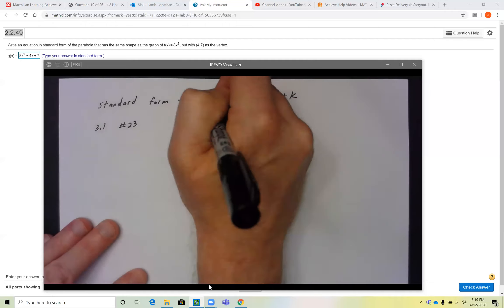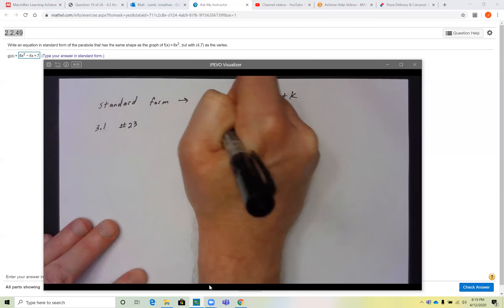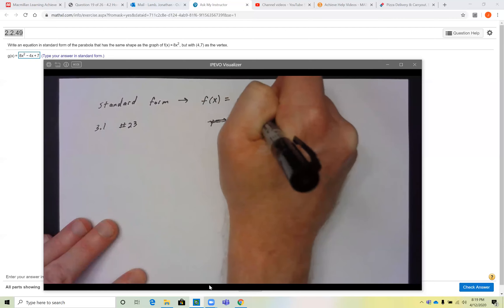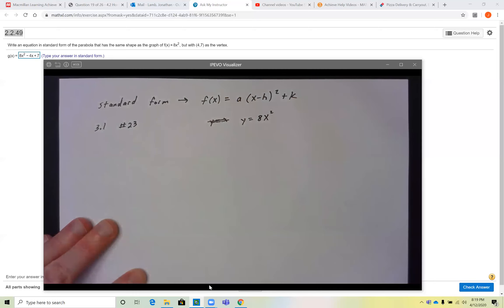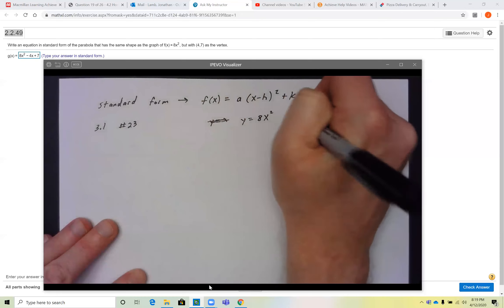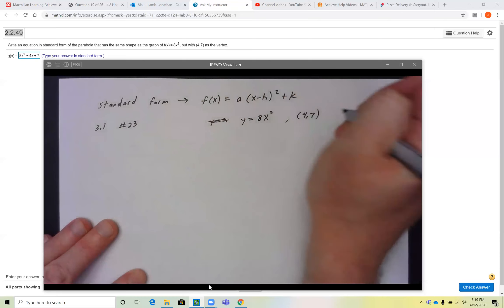So I know if the base function is y = 8x², well then the function that has the same shape of that, that goes through the vertex (4, 7)...